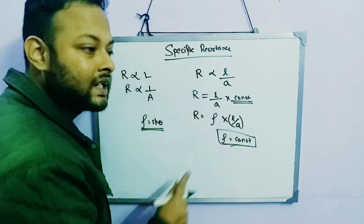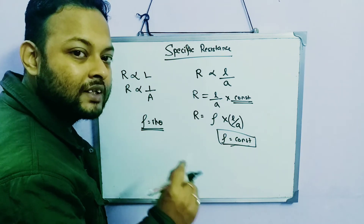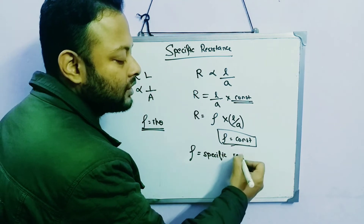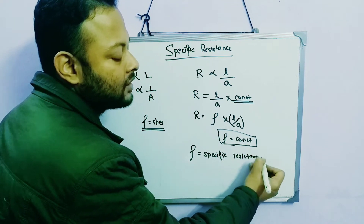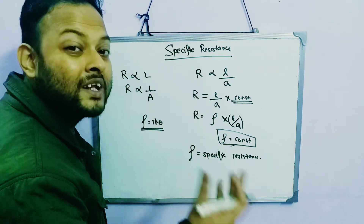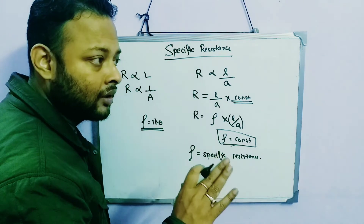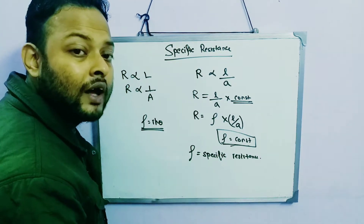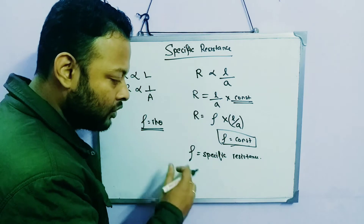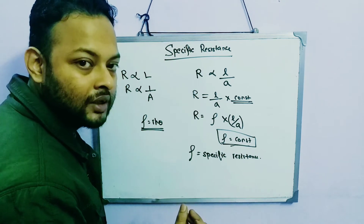This rho, which is a constant, is called specific resistance or specific resistivity. The value of rho depends on the material. If we have copper, we get one value of specific resistance; if we have aluminium, we get a different value. So specific resistance depends on the material — different materials have different specific resistance.